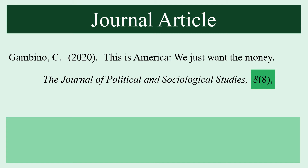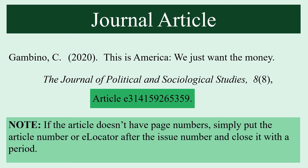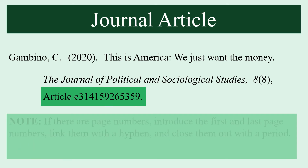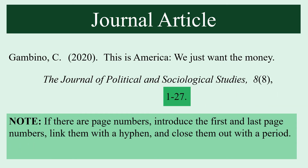The volume and issue number are typically followed by a page range. However, if the article is published strictly online and doesn't have page numbers, you can simply put the article number or elocator after the issue and close it out with a period. If there are page numbers, introduce the first and last page numbers and link them with a hyphen before closing them out with a period.